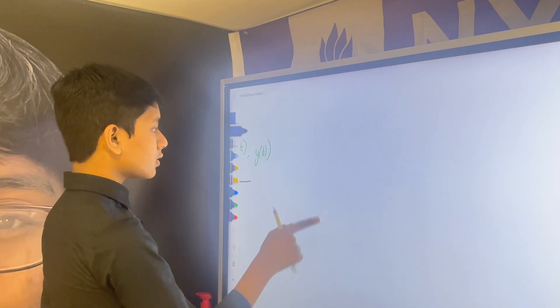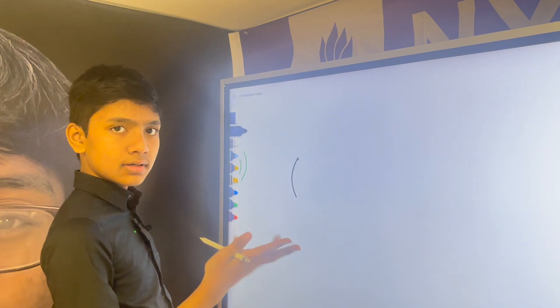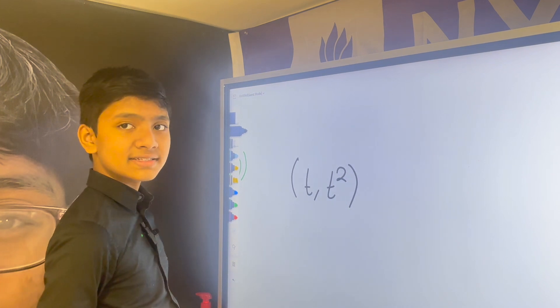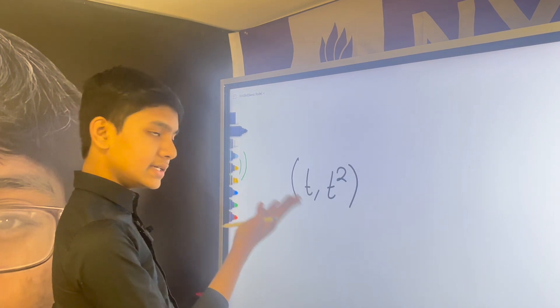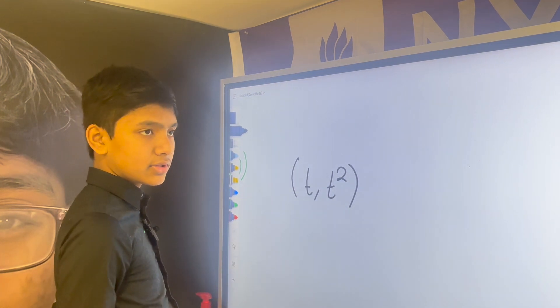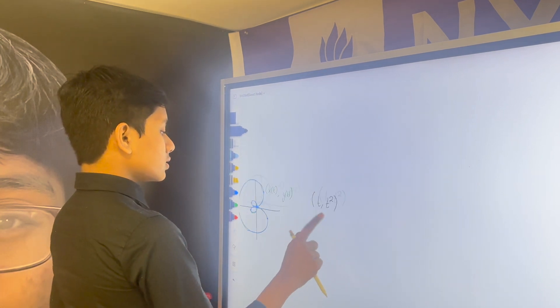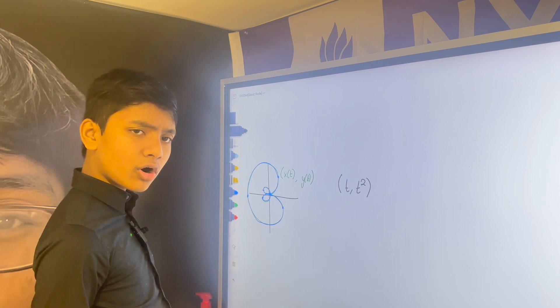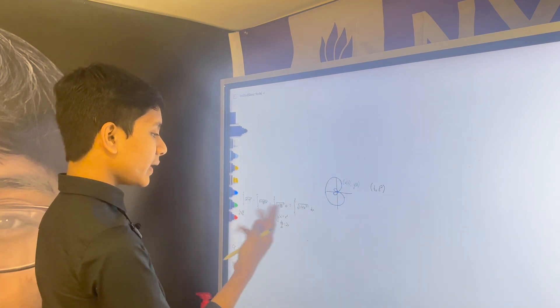So, for example, you could write y of x equals x squared as t comma t squared even though that's no fun. So, you might be asking, how do we find arc length when it comes to parametric curves?